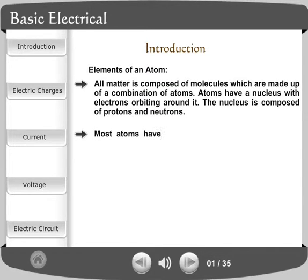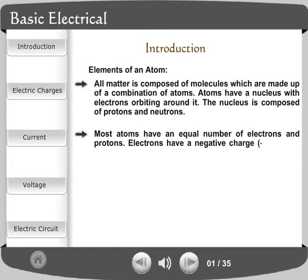Most atoms have an equal number of electrons and protons. Electrons have a negative charge minus. Protons have a positive charge plus. Neutrons are neutral.